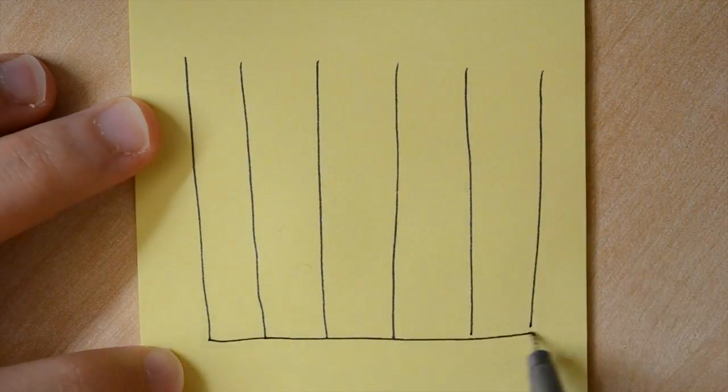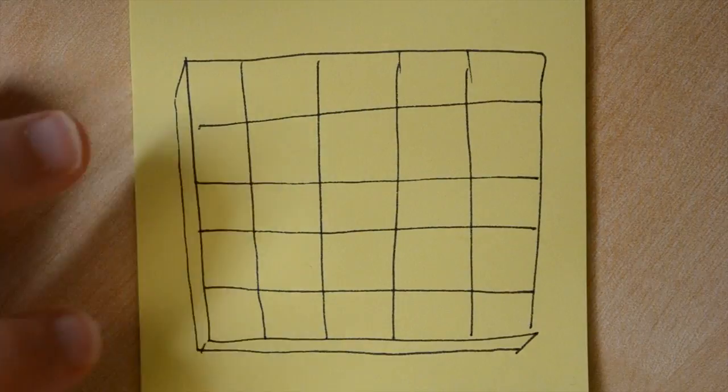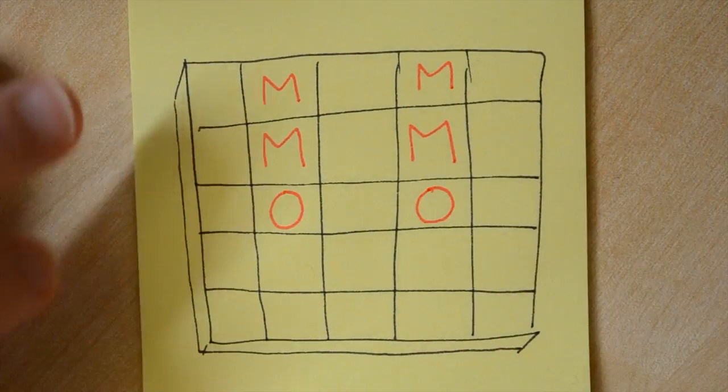The game world is created using an array, which you can imagine as a board with a grid on it. Then an algorithm goes through and puts M's and O's in some of the boxes based on a certain pattern.